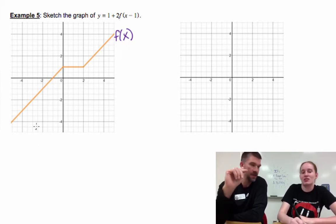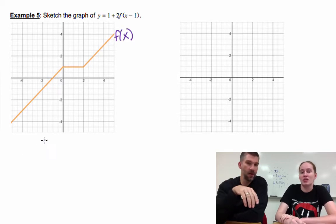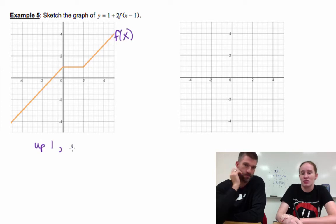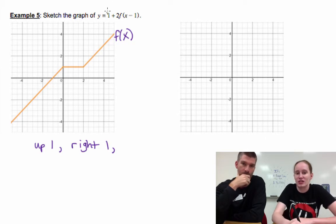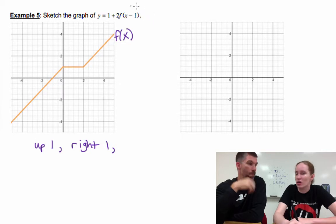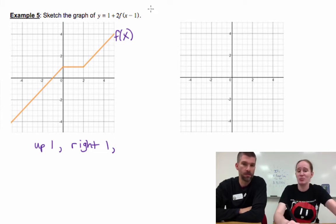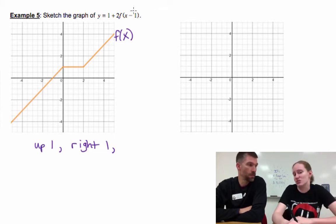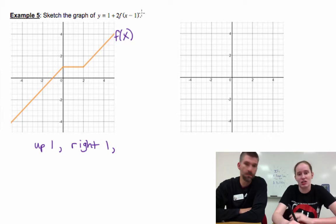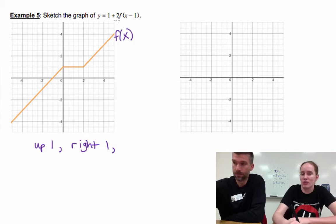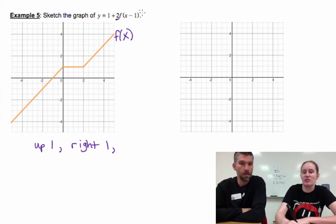First off, the easiest two things for me to see: we're going to raise that whole graph up one unit, and we're going to slide that whole graph to the right one unit. Let's make sure our viewers at home follow the fact that this one right here, even though it's in front, we're adding one to our function. Then the last part is the two in front of f of x is a vertical stretch by a factor of two.